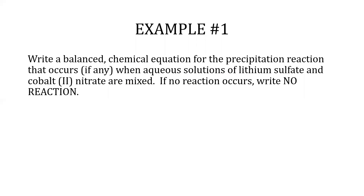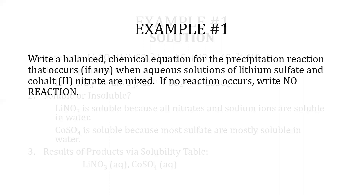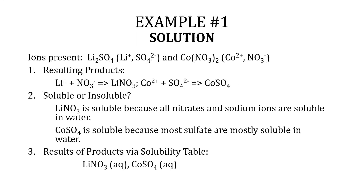Example 1: Write a balanced chemical equation for the precipitation reaction that occurs, if any, when aqueous solutions of lithium sulfate and cobalt(II) nitrate are mixed. If no reaction occurs, write no reaction. The ions from the reactants are Li⁺ and SO₄²⁻ from lithium sulfate, and Co²⁺ and NO₃⁻ from cobalt(II) nitrate.